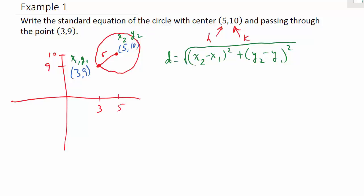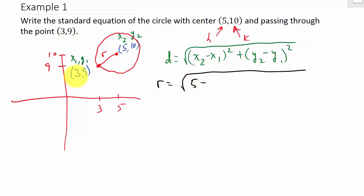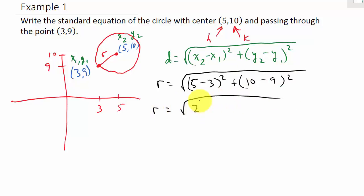Let's find our radius. The radius equals the square root of (x2 minus x1) squared plus (y2 minus y1) squared — because r is your distance. So the radius is the square root of (3 minus 5) squared plus (9 minus 10) squared, which is the square root of 2 squared plus 1 squared, which is the square root of 4 plus 1. So the radius is the square root of 5.